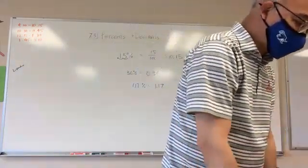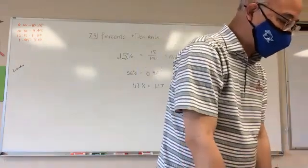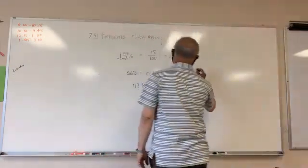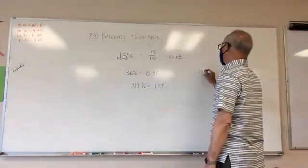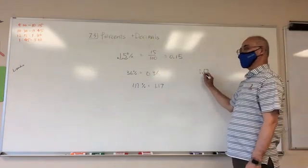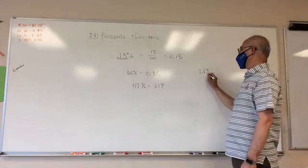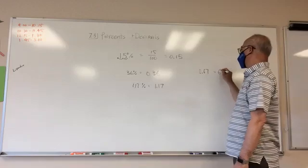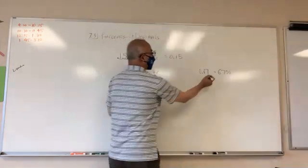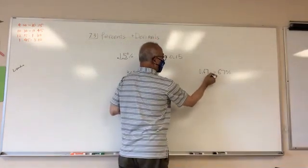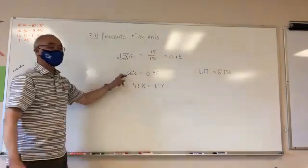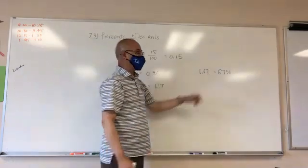It says there in the middle box to write a decimal as a percent. So if I have a decimal, let's say it is 0.67. Now I'm going to write this, go back to percent. I'm going to go backwards. I'm going to go from here two to the right and say, well, this is the same as 67 percent.